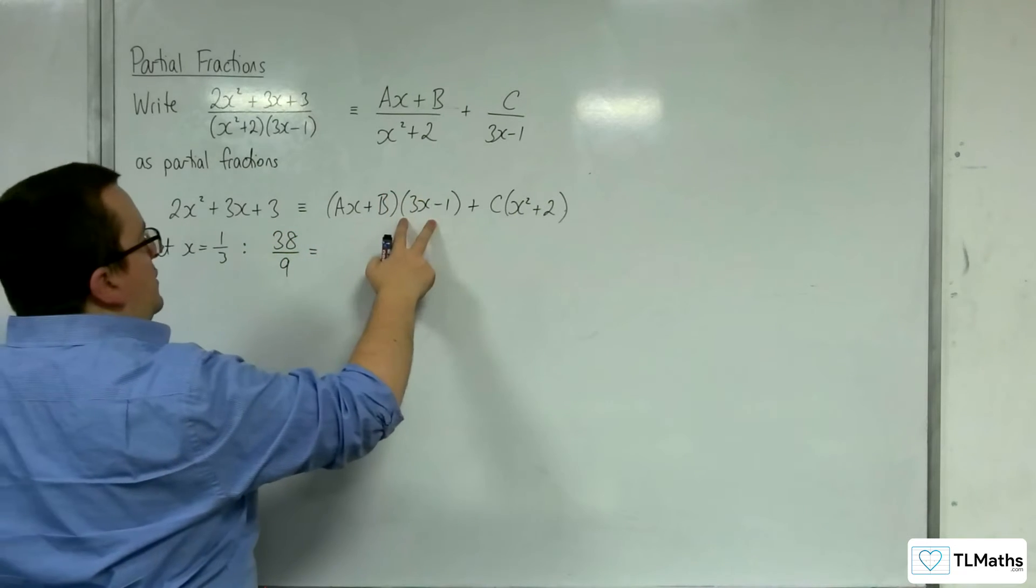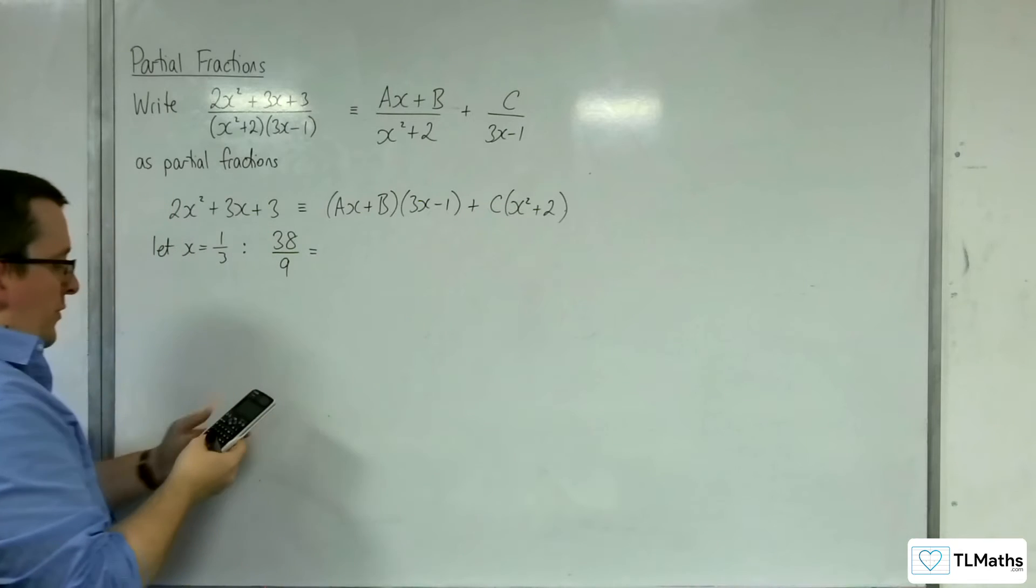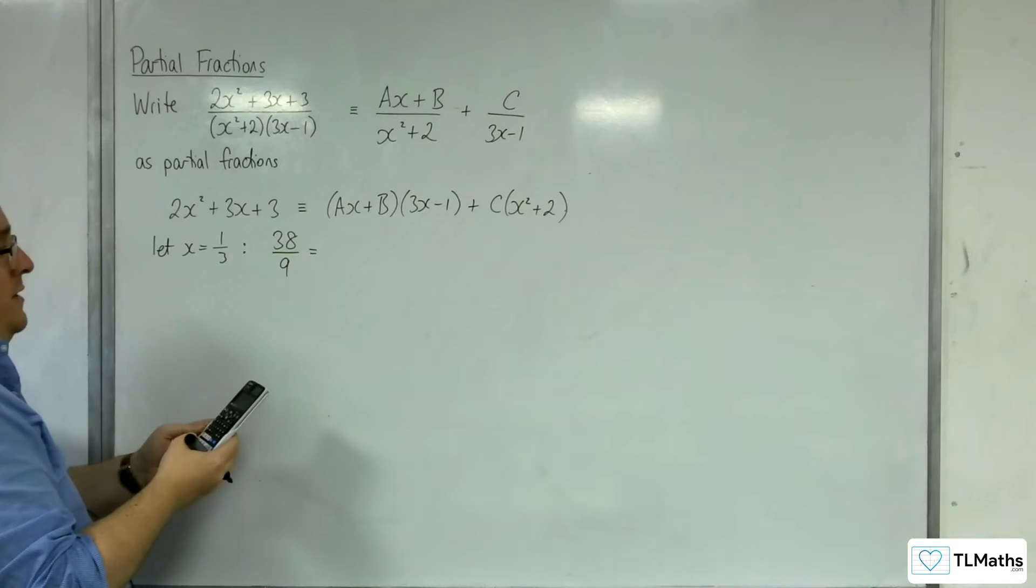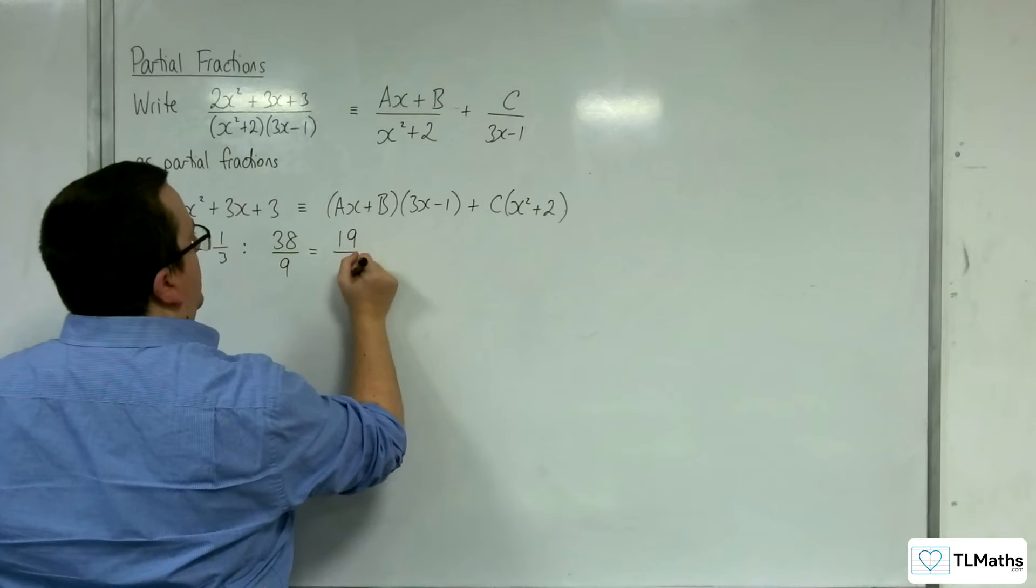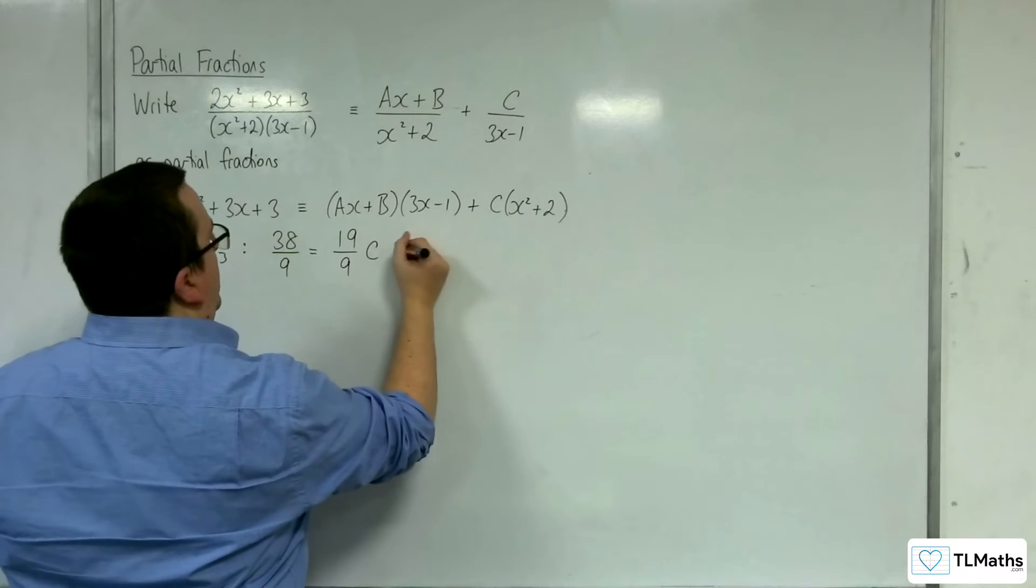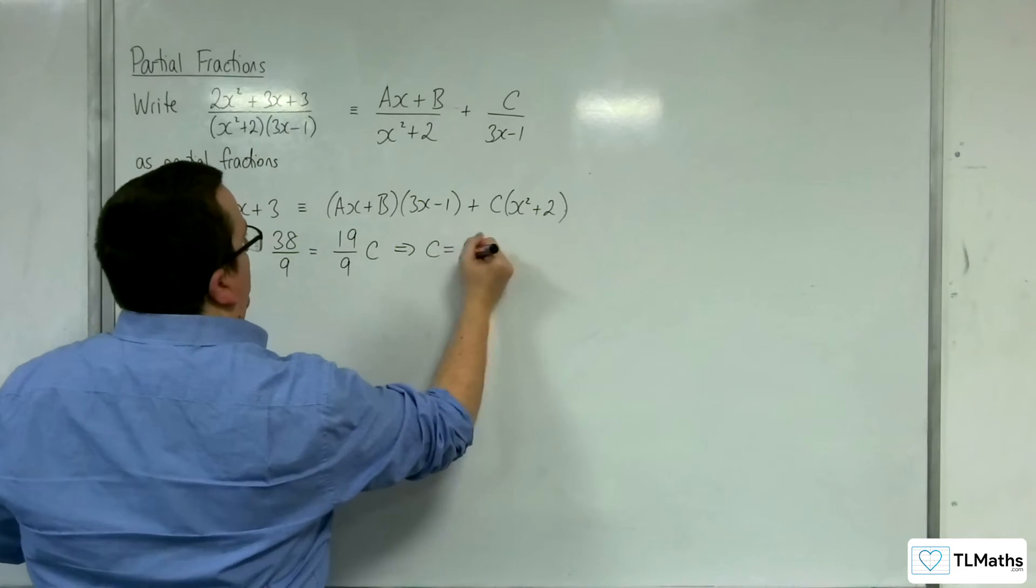So that's knocked out that bracket. So we've got 1 third squared plus 2, it's 19 ninths. So 19 ninths times c. So that means that c has got to be equal to 2.